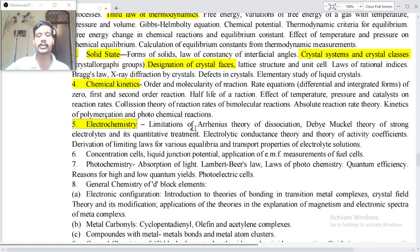Point number five: Electrochemistry - limitations of the Arrhenius theories of dissociation, Debye-Hückel theory of strong electrolytes and its quantitative treatment, electrolytic conductance theory and theory of active coefficient, derivations of limiting laws for various equilibrium areas and transport properties of electrolyte solution.